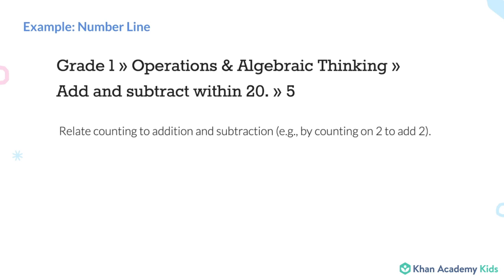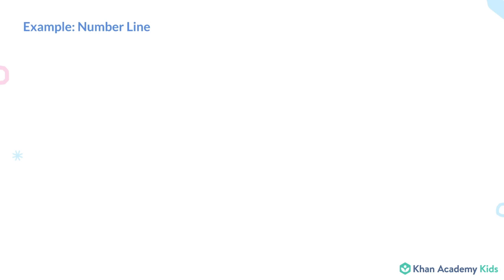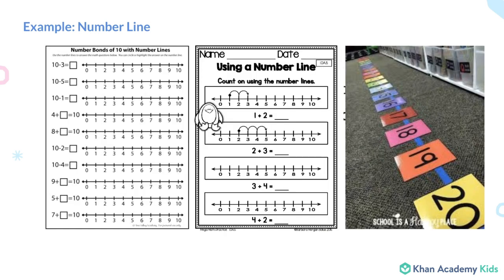Our first example is around adding and subtracting within 20 and relating counting to addition and subtraction — for example, counting on 2 to add 2. One tool used is a number line. Students need to understand the starting point, the number of spaces to move, and which direction to move.